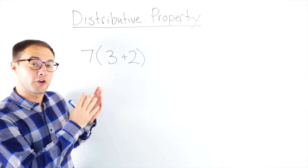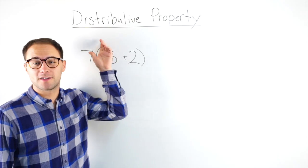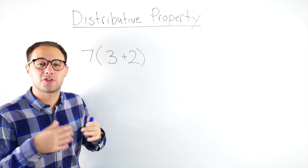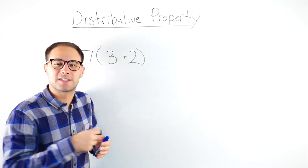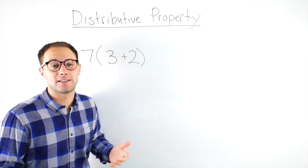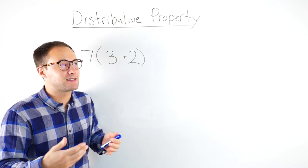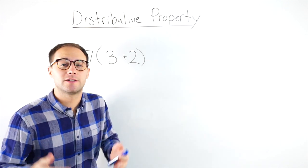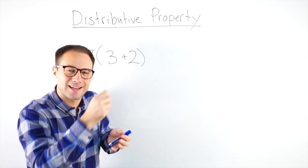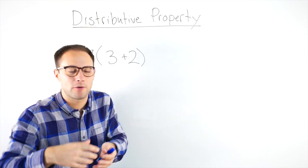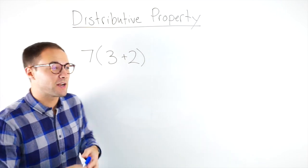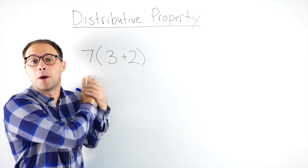Let's talk a little bit about the distributive property. If you look at the word distributive, it may make you think of distribute — which just means to give something to everyone in a group. If you think of the SATs, when they're getting ready to start, they might say 'now we're going to distribute the test,' meaning they give the test to everyone in the room. The distributive property works the same way. Instead of distributing a test, we're distributing a number.